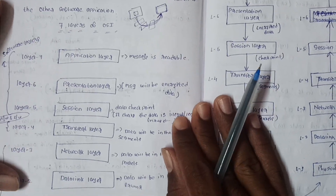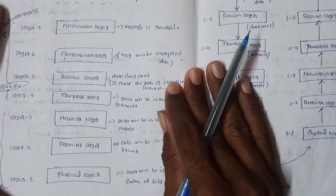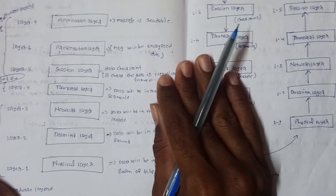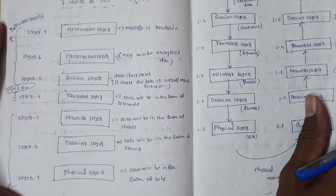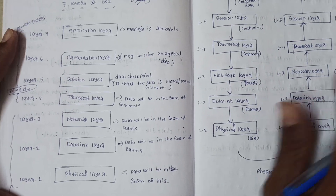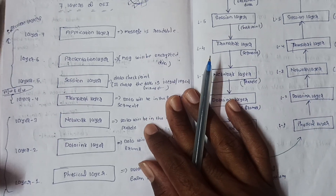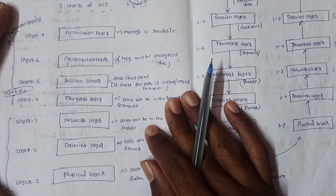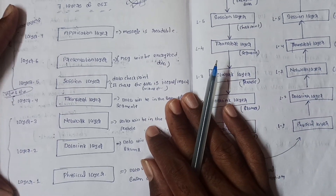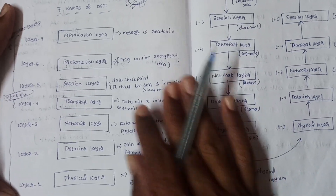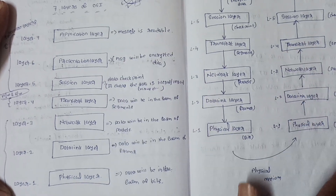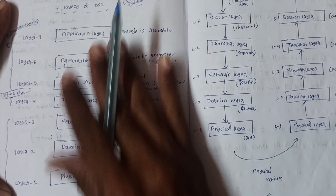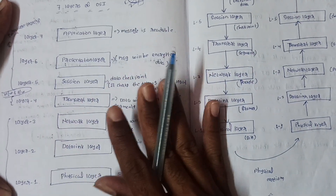In the OSI reference model, we use a total of seven layers. Using this diagram, we can explain all seven layers clearly.